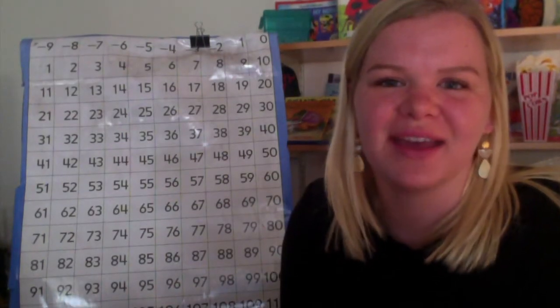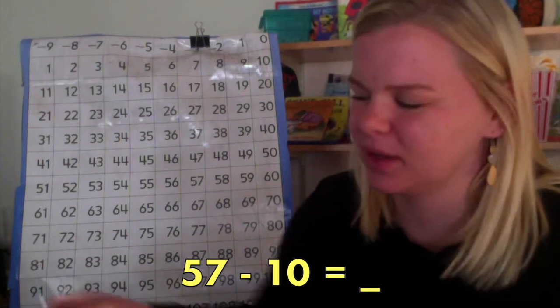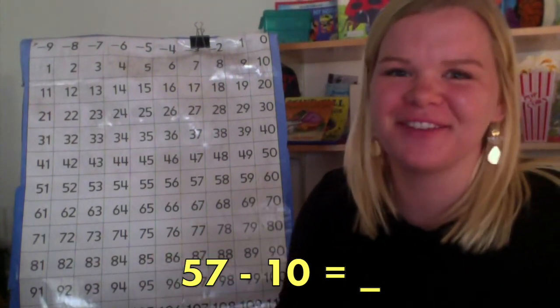Next, let's try 57 minus 10. First, we find where we begin. 57. I'm going to look for the 50s, which means there is a 5 in the tens place.